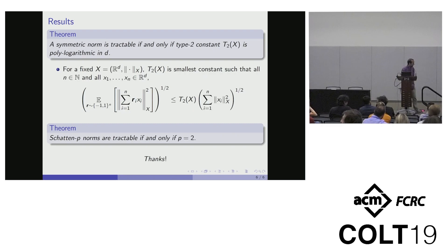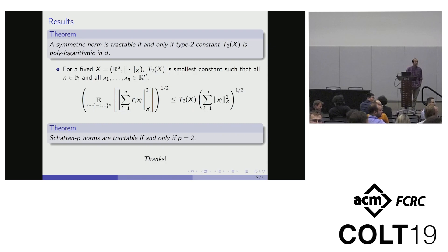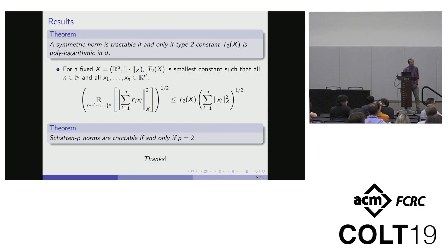These results are in the statistical query model, and the lower bounds are unconditional — that's what makes them meaningful. We showed it in the worst case: if all your queries have error greater than some value, then you need many queries.